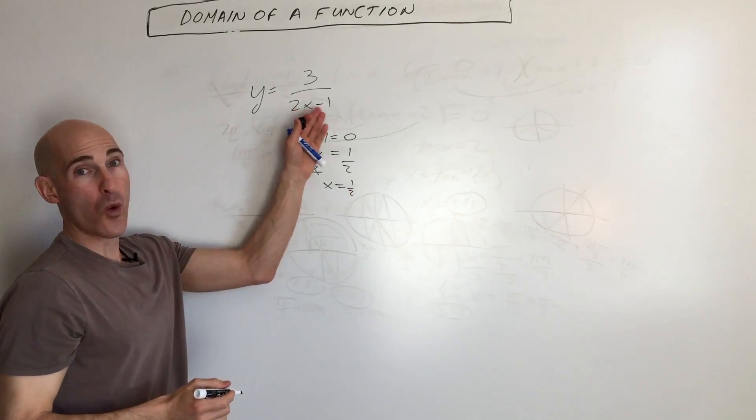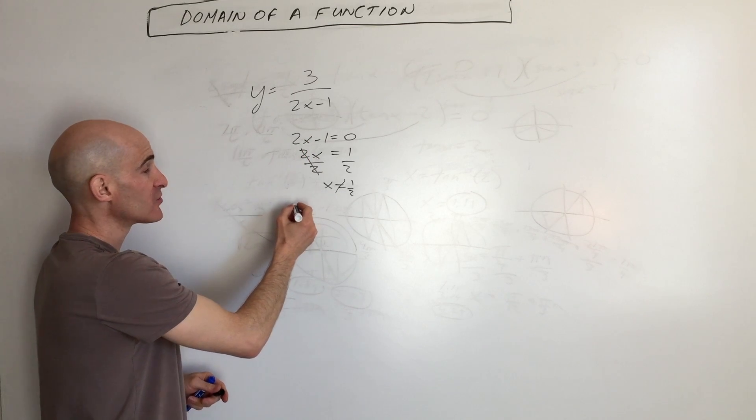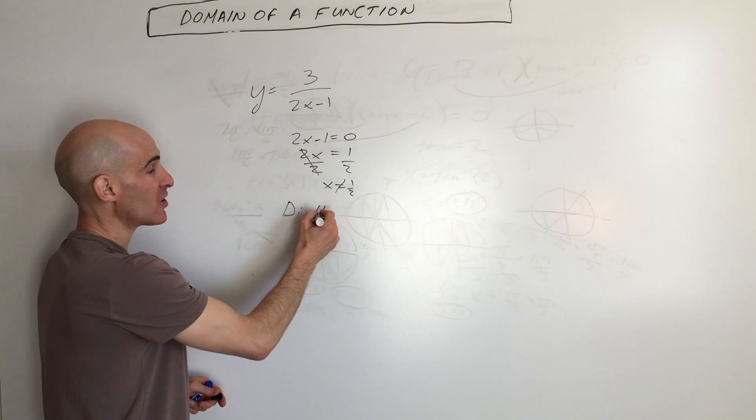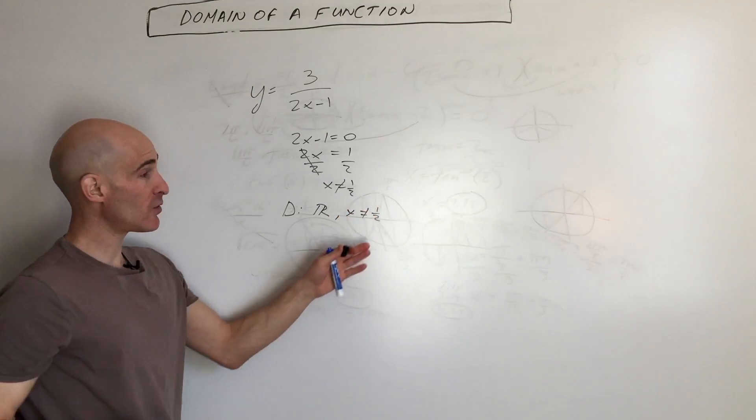Now, we don't want x to be one-half because then you'd be dividing by zero. So you could say that the domain is all real numbers, but x can't equal one-half. That's one way to write it.